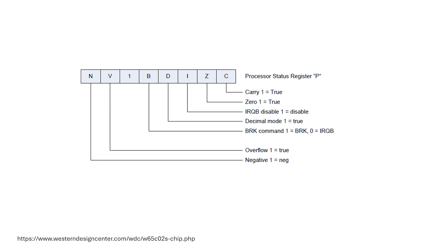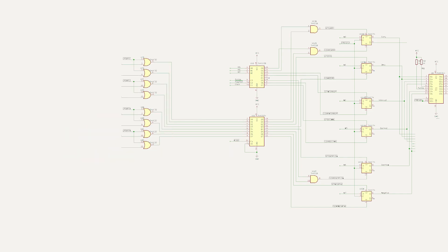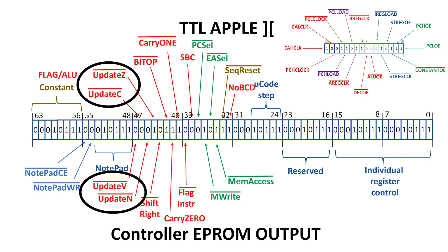But remember that each of the carry, zero, negative, and overflow flags can be set or cleared based on the result of an ALU operation. For ALU operations, we have the four set and four clear signals from the negative, overflow, zero, and carry flags, and we need a way of deciding whether the ALU can update these flags. Ultimately, I use these signals, update V-bar, update C-bar, update N-bar, and update Z-bar, which come directly from the control word.